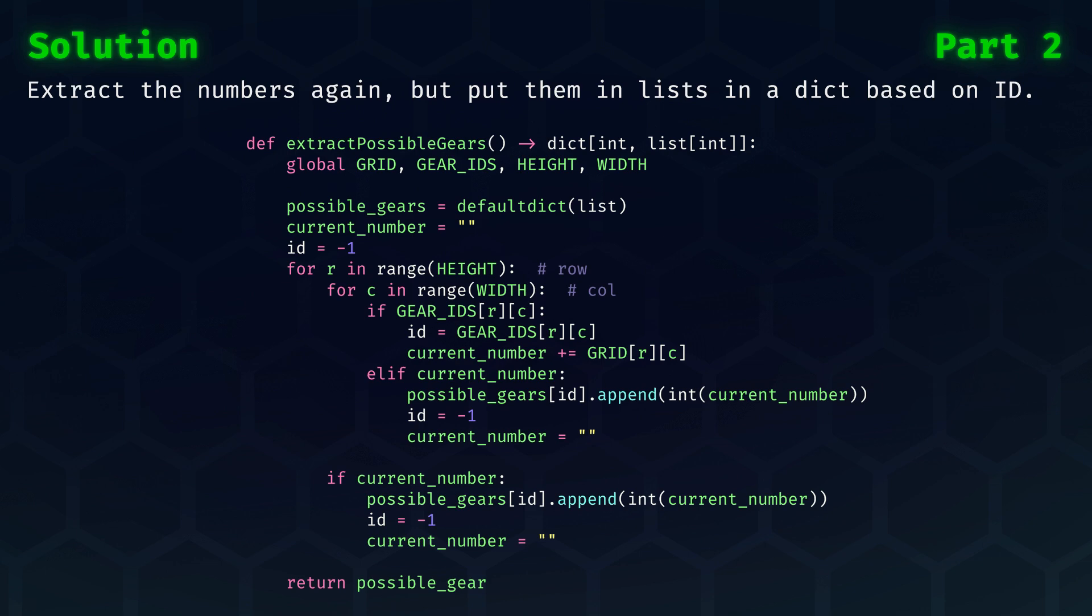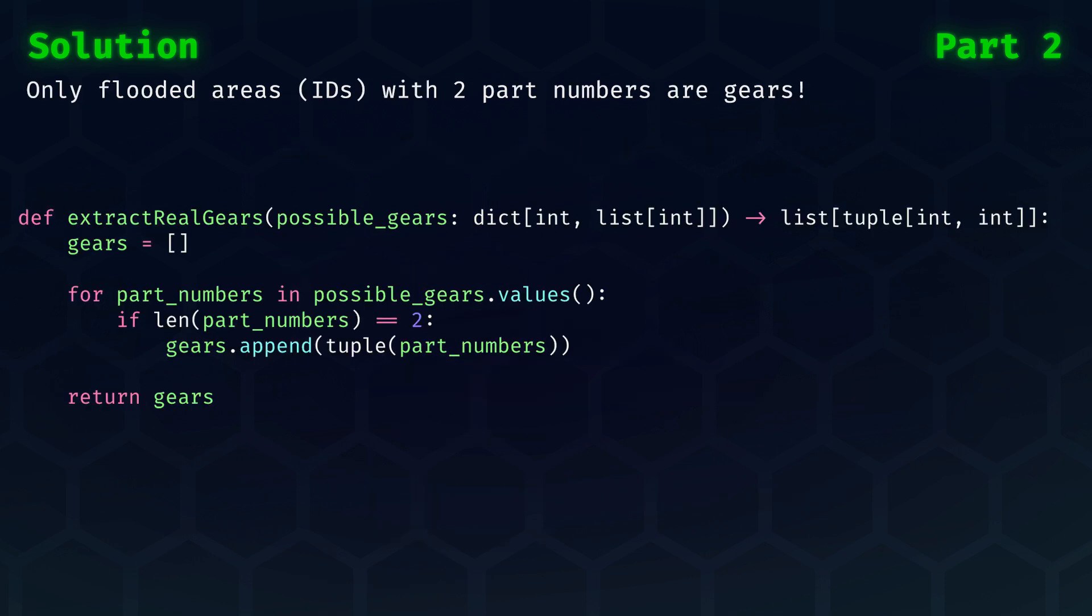Extracting the possible gears is also very similar to Part 1, but we put the numbers in lists, which are stored in a dict. The keys in that dict shall be the IDs. Note that we're not yet considering to remove the areas which do not have exactly two part numbers. This is a sub-problem that the next function will solve. If we have the dictionary, then checking which areas are gears is as simple as checking the length of the list.